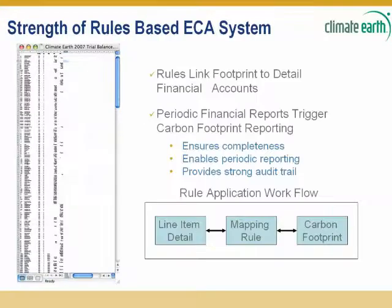The net result of this rules-based system is that we now have rules which link footprint detail, carbon footprint detail, to financial accounts. This creates an analytic framework. It links financial metrics to carbon metrics, and we'll show the power of that in a few moments. It provides a very strong audit trail in that every rule can be replicated and clearly identified and tested through standard audit practices.